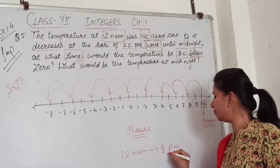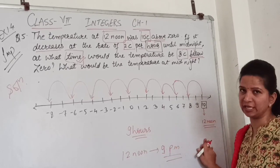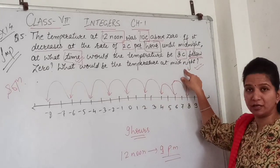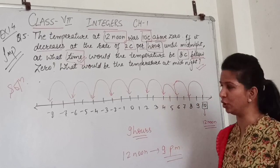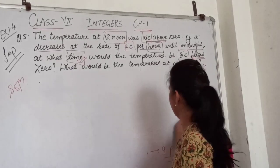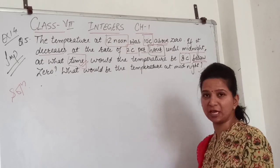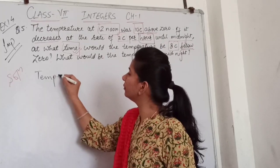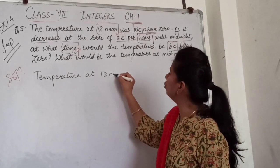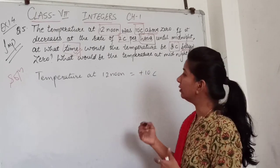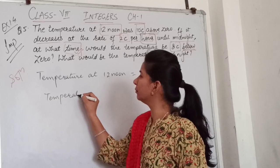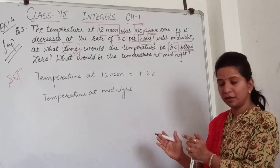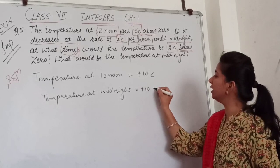What will be the temperature at midnight? Midnight is 12 o'clock at night. At 12 noon we had plus 10 degrees Celsius. Minus 2 degrees per hour.